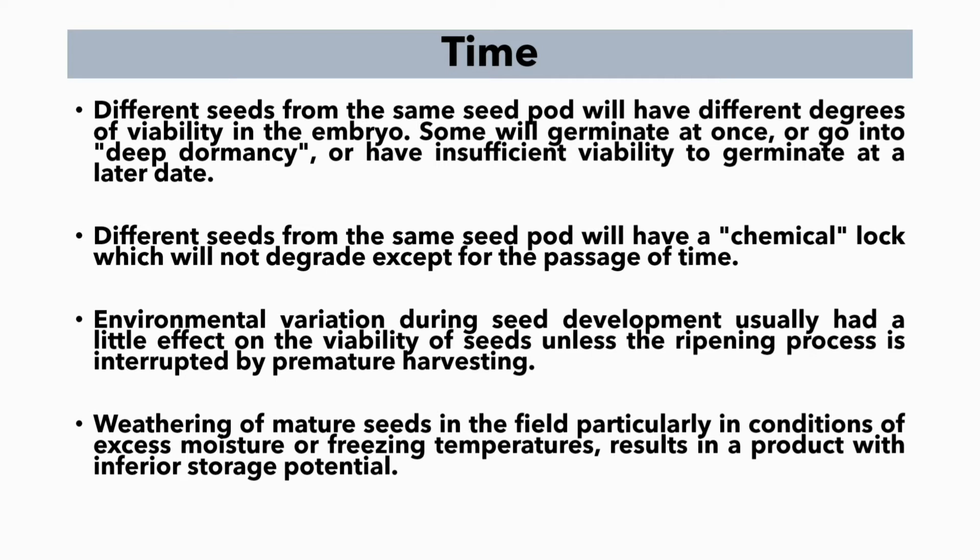Environmental variation during seed development usually has little effect on the viability of seeds unless the ripening process is interrupted by premature harvesting. Weathering of mature seeds in the field — particularly in conditions of excess moisture or freezing temperatures — results in a product with inferior storage potential.